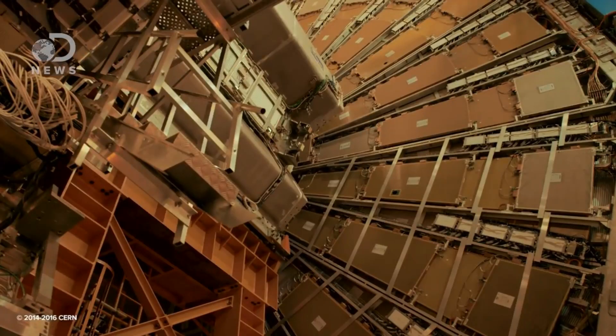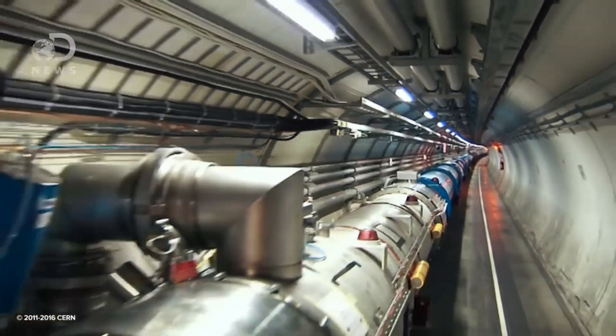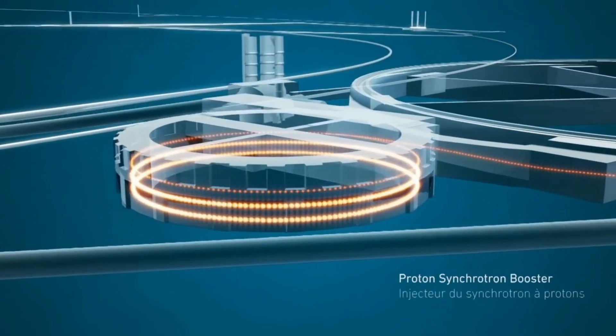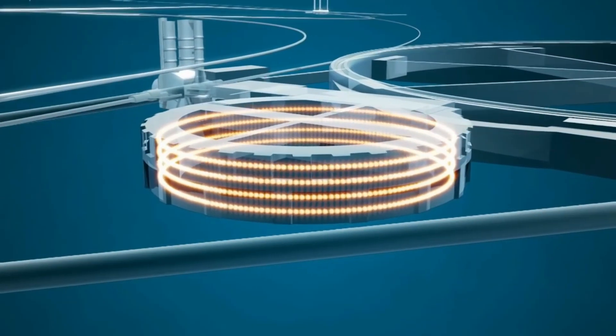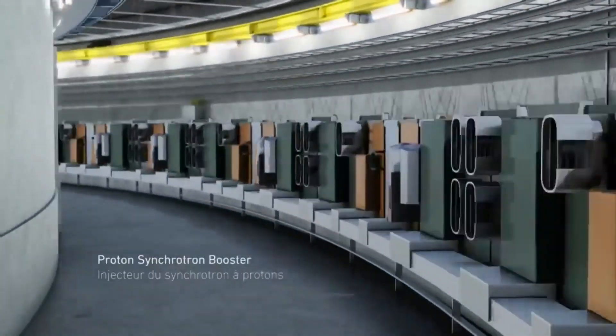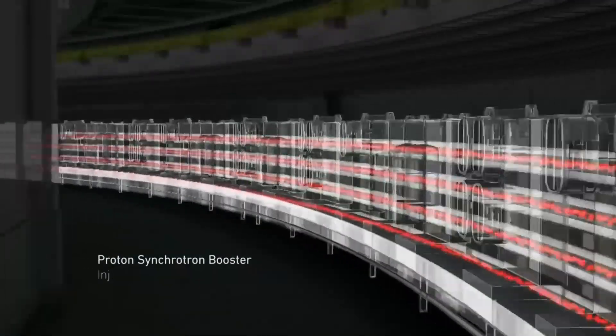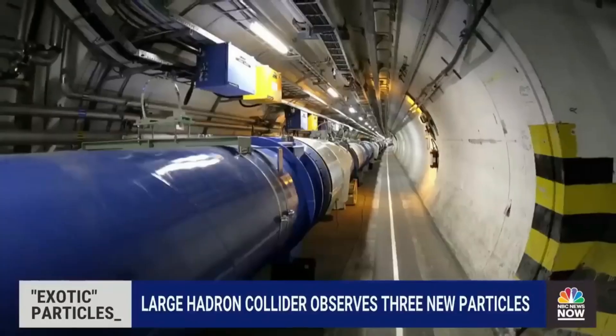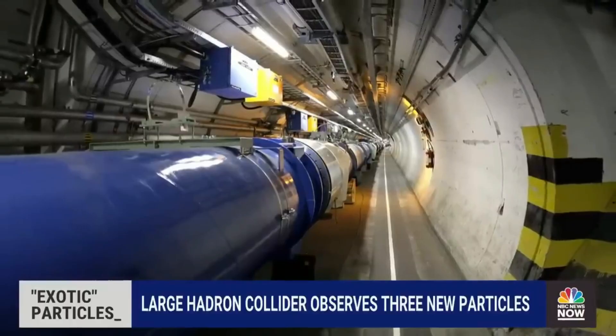However, what precisely is a particle accelerator, and why is it necessary to have one? The Large Hadron Collider is a machine that accelerates subatomic particles to extremely high energies in a contained setting. This allows researchers to study the interaction that occurs after the acceleration, which is essentially the LHC helping researchers test theoretical predictions and determine whether or not they have any flaws.